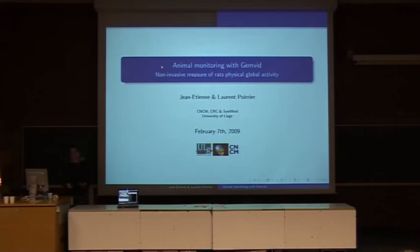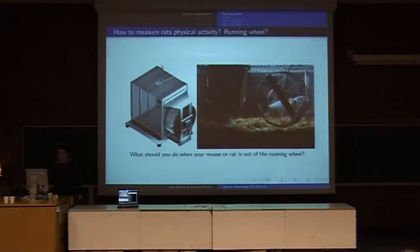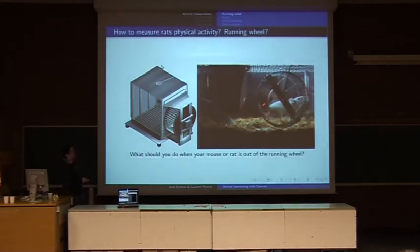Obviously, we were not the first to think about something to measure the activity of animals. The first device that comes to mind is the running wheel. The problem is, what are you doing when your mouse or rat is outside the running wheel? You can't put the rat there for 24 hours a day. The second problem is that you measure only the motor activity and not the general activity. If the rat is just moving the head, you can see it, but you can't measure it.